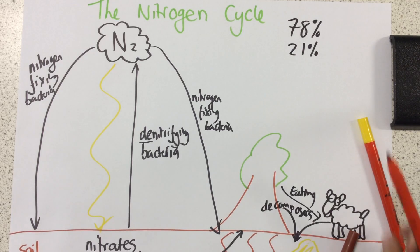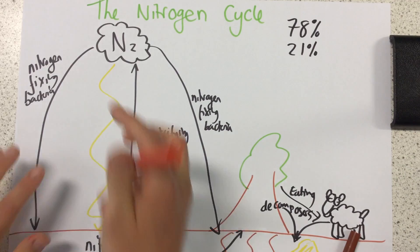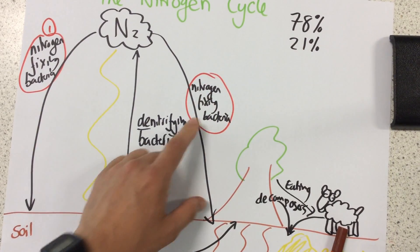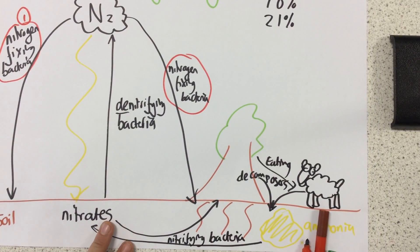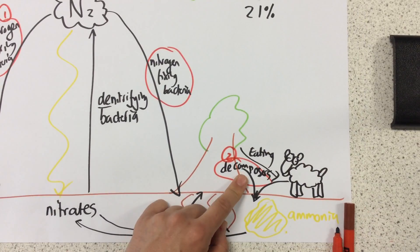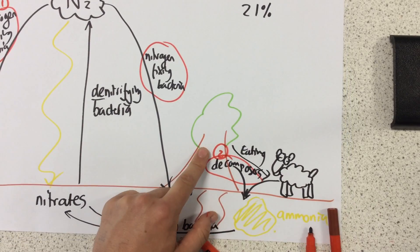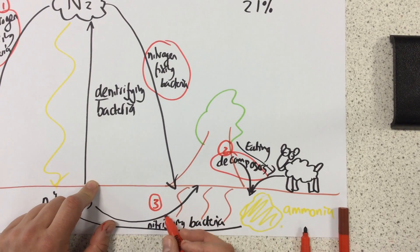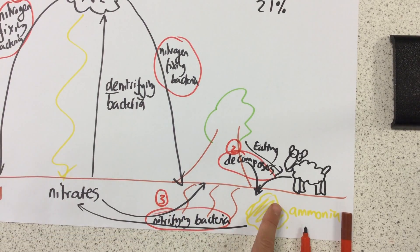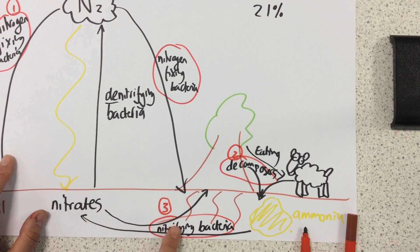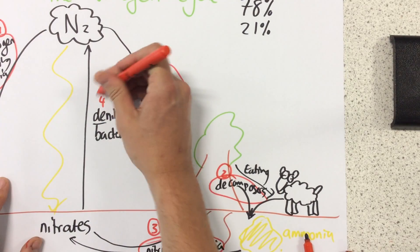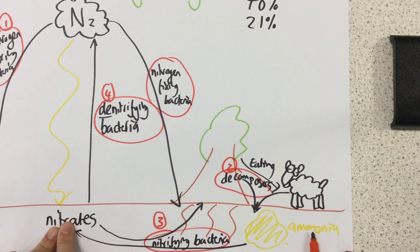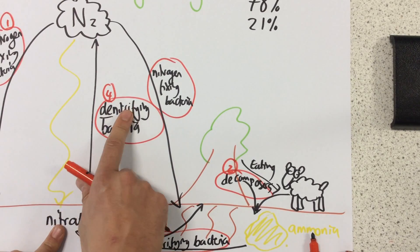Let's have a quick recap of the four different types of bacteria. Type one: nitrogen-fixing bacteria, found in the soil and in plant roots. Type two: decomposers, which break down dead plants, dead animals, and urea into ammonia. Type three: nitrifying bacteria, which turn ammonia into nitrates — think 'nitrifying' as making nitrates. Type four: denitrifying bacteria, which return nitrogen to the atmosphere from nitrates.